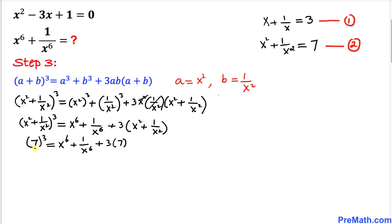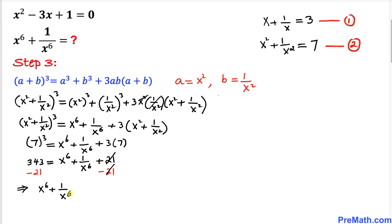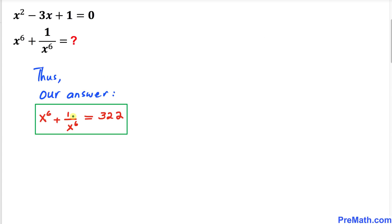Now 7 power 3 is 343, so we have 343 equals x power 6 plus 1 over x power 6 plus 21. Subtracting 21 from both sides, we get x power 6 plus 1 over x power 6 equals 322. Thus our answer is 322. Thanks for watching and please don't forget to subscribe to my channel for more exciting videos.